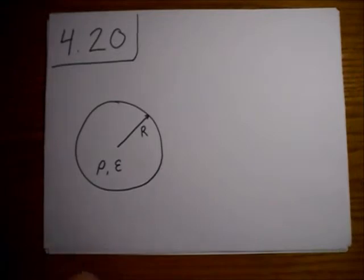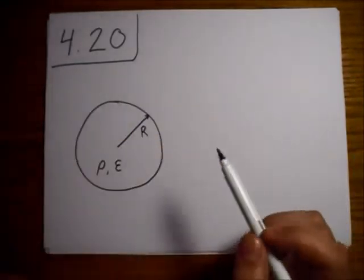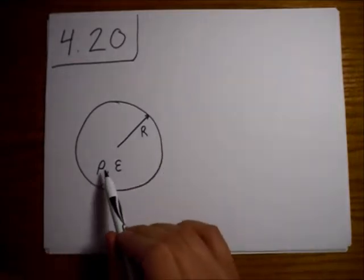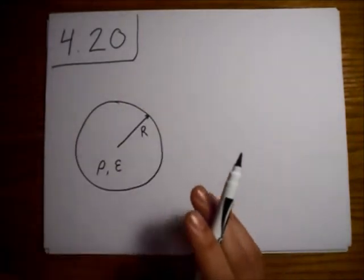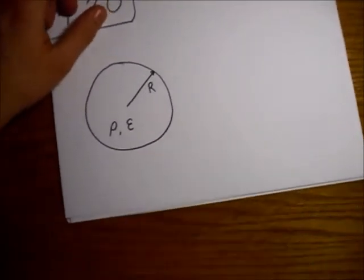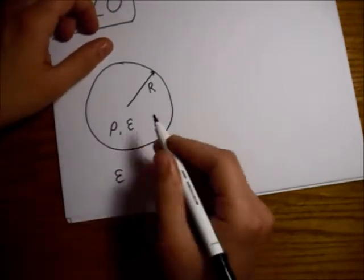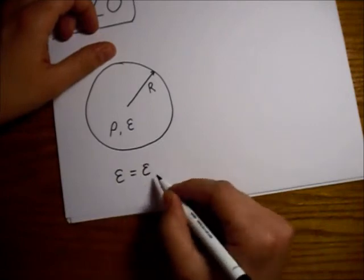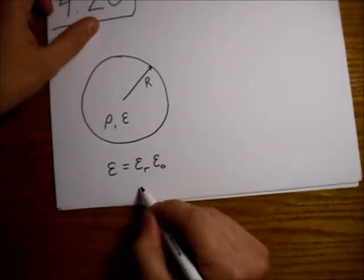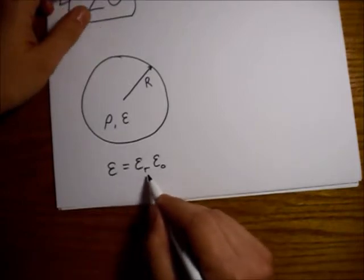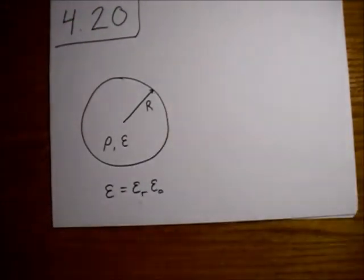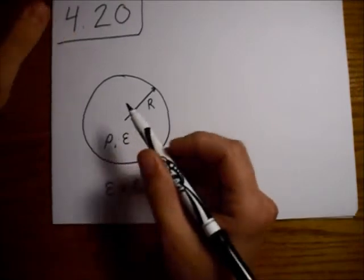This is Griffiths Electrodynamics Problem 4.20. We have a sphere of linear dielectric with a uniform free charge density rho and a permittivity of epsilon. Since it's a linear dielectric, the permittivity equals the dielectric constant times the permittivity of free space. We'll express everything in terms of the dielectric constant. The sphere has radius R, and we want to find the potential at the center relative to infinity.